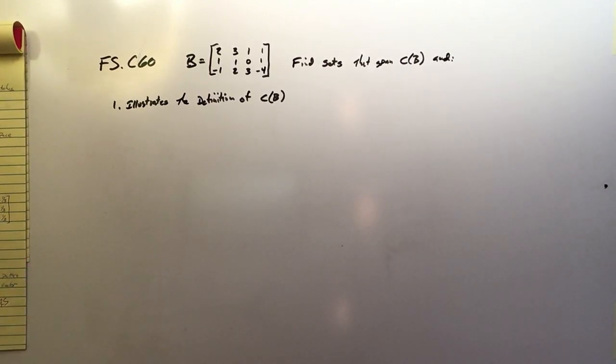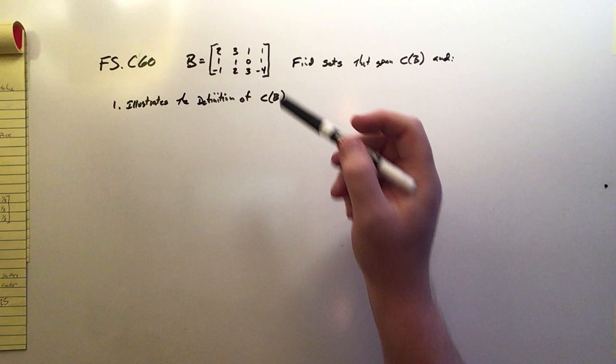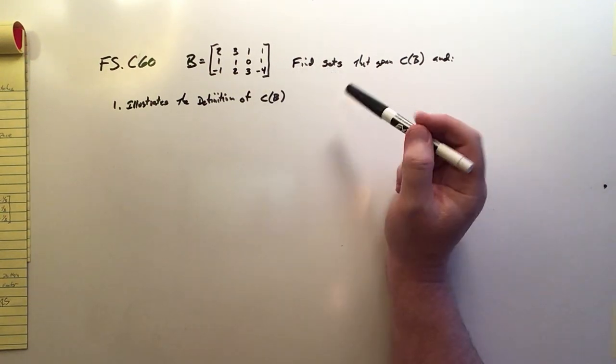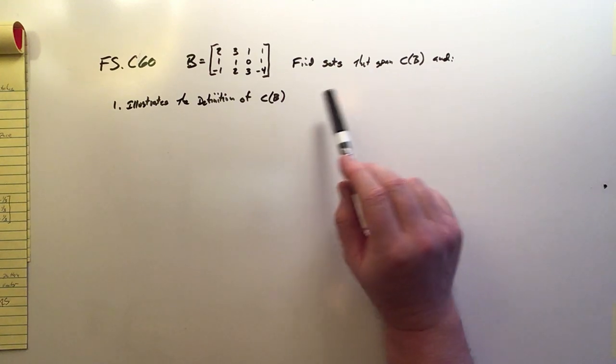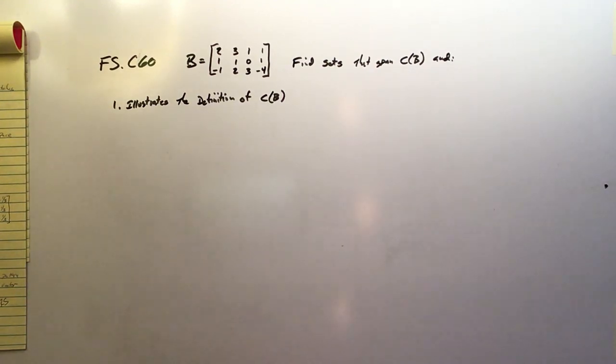Okay, this is FxC60, and we're going to take matrix B and find sets that span its column space, but we're going to have them also meet some additional conditions.